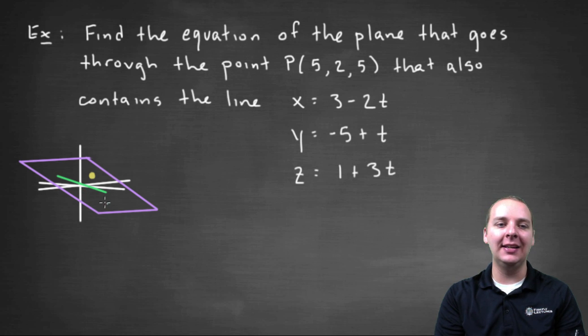This line is contained inside of the plane here, and that's the line x equals 3 minus 2t, y equals negative 5 plus t, and z equals 1 plus 3t.